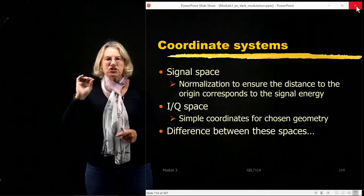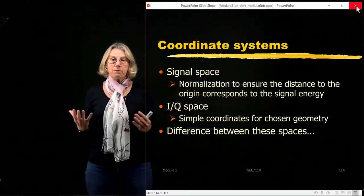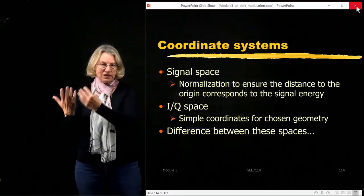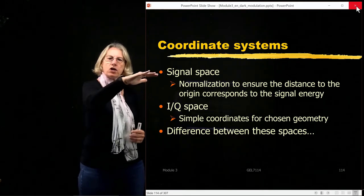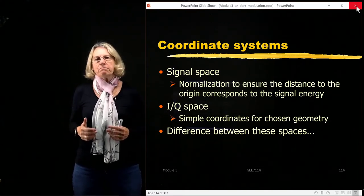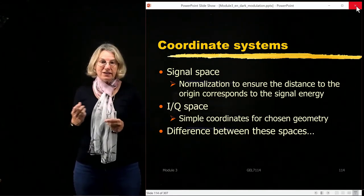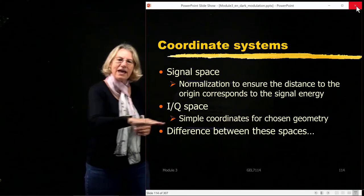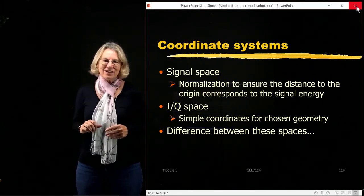Getting the right average energy per symbol is important to put into the equation, but also very important for finding the minimal distance, because the minimal distance must be written as a function of the average energy per symbol. This really distinguishes what I call signal space from what I call IQ space, because when we look at strange geometries for QAM, sometimes we just want an easy set of coordinates that allows us to do the geometry and compare distances between points — purely inspired by geometry, to make the trigonometry easier to execute.